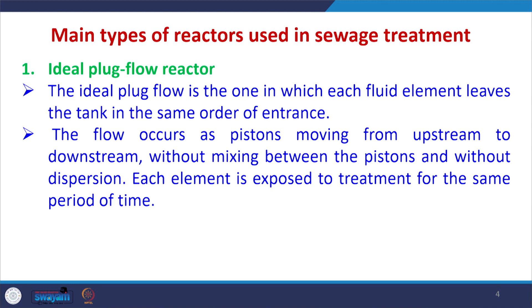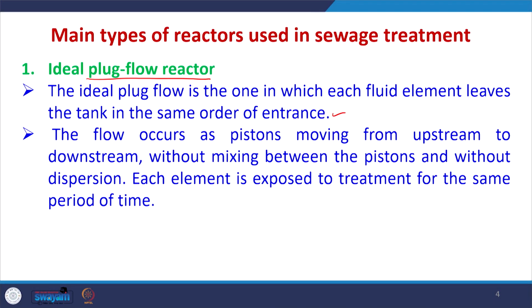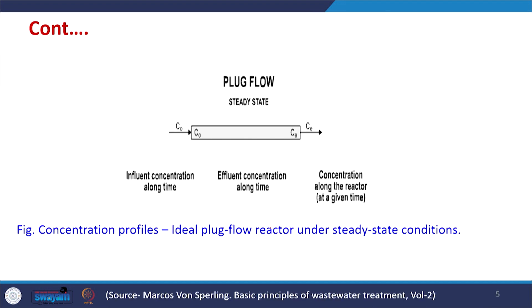The main types of reactors used in wastewater treatment are: first, the ideal plug flow reactor. In an ideal plug flow reactor, each fluid element leaves the tank in the same order of entrance — the fluid element which first enters the tank leaves first. The flow occurs as pistons moving from upstream to downstream without mixing between the pistons and without dispersion. Each element is exposed to treatment for the same period of time.